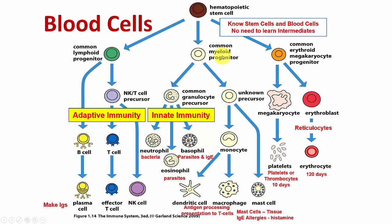Then we have myeloid progenitors that provide innate immunity. The neutrophil, or polymorphonuclear leukocyte, kills bacteria. Basophils, which are blood cells very much like mast cells in some ways, kill parasites and have IgE on their surface. Eosinophils also kill parasites. So these cells provide protection from bacteria and parasites.